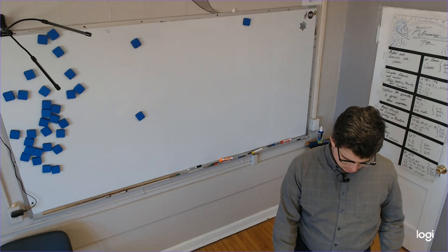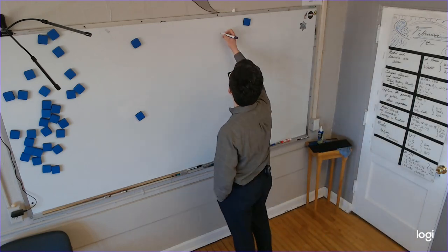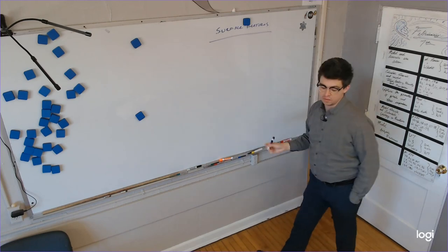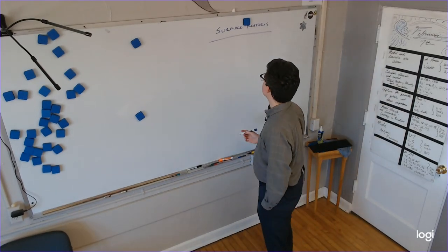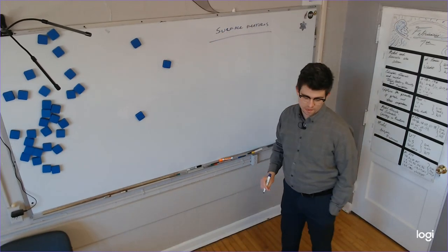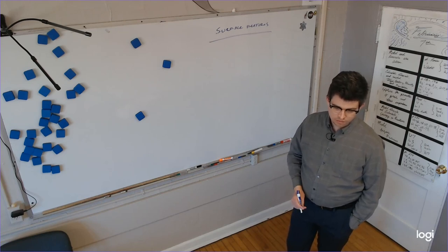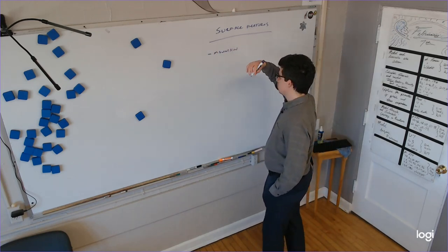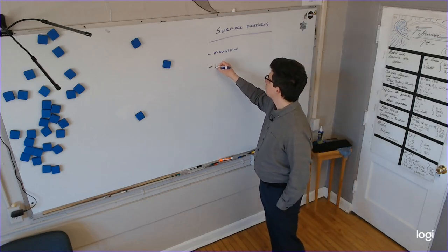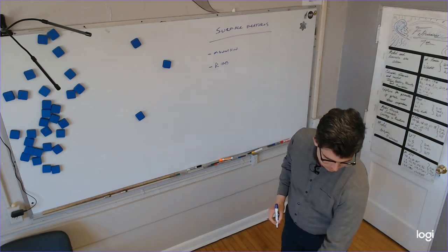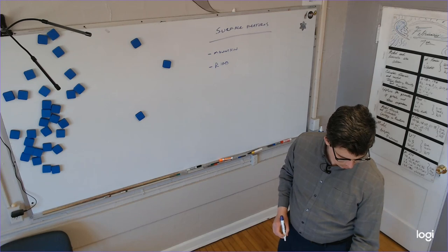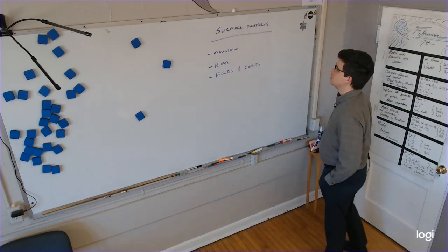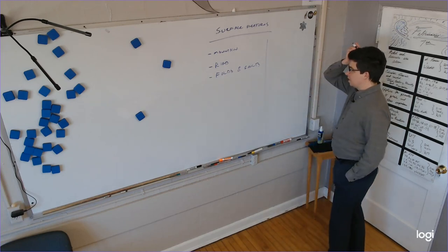Earth science time. Today we're talking about surface features, including what you explored in the self-check before this. We're talking about large-scale surface features here primarily — things like water, mountains, valleys, and rifts. We're also going to include folds and faults, which are not necessarily large-scale features, but they initiate our discussion about plate tectonics.